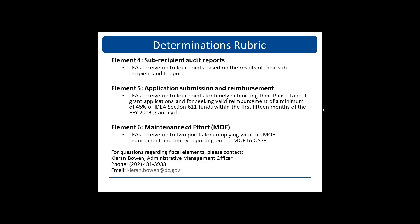Elements 4, 5, and 6 are all fiscal elements. Element 4 is Subrecipient Audit Reports. Element 5 is Application Submissions and Reimbursement. And Element 6 is Maintenance of Efforts. If you have any specific questions regarding these fiscal elements, please contact Mr. Kieran Bowen, whose contact information is noted on this slide.